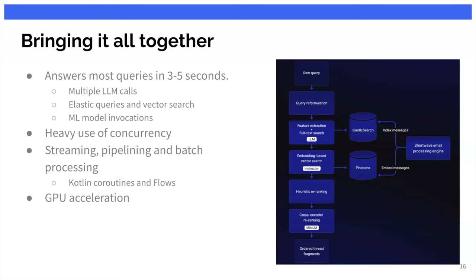At the end of cross-encoder re-ranking you get an ordered set of documents that gets shipped off to an LLM to reason about and produce the answer. The full architecture goes: raw query → query reformulation → feature extraction → Elasticsearch queries → semantic search → heuristic re-ranking → cross-encoder re-ranking → ordered thread fragments → LLM. This entire process end-to-end involves multiple LLM calls, some ML model inferences, Elasticsearch queries, and vector search queries. We figured out how to do this whole thing end-to-end in about three seconds for most queries. It took a lot of streaming, parallel planning, and batch processing to make it work — a lot of our backend is in Kotlin with heavy use of coroutines.